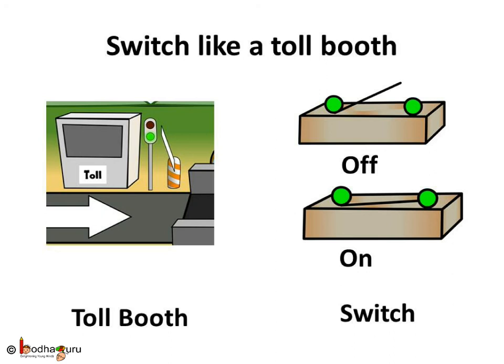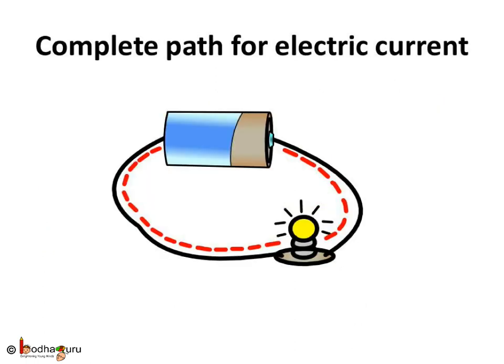The flow of electric current can be stopped or started using a switch. So, the switch acts like a controller of the current like a toll booth for the bridge crossing. The current needs a complete path to flow, that is, coming back to the starting point again. This complete path is called circuit.